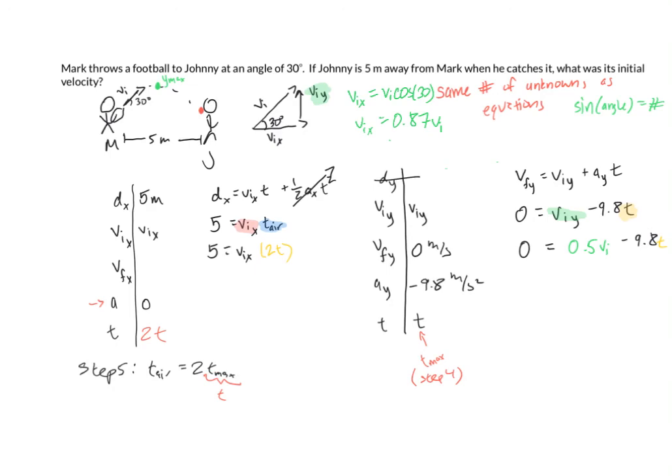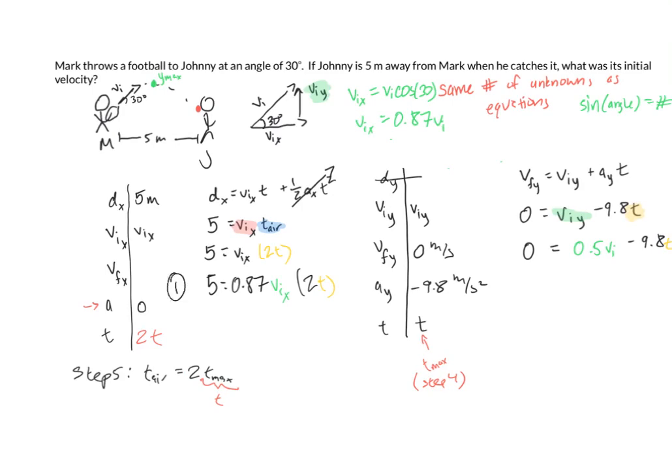So let's go ahead and put that in. I have 5 equals 0.87 times v initial in the x direction times 2 times t. And in my other equation, I'm going to go ahead and call that equation number 1. And then I have equation number 2, which says that 0 is equal to 0.5 times v initial minus 9.8 times t. And what I'm going to do as well is I notice I just accidentally wrote this extra little x here that doesn't need to be there. I'm going to go ahead and erase that. There we go. We have two equations and we have two unknowns.